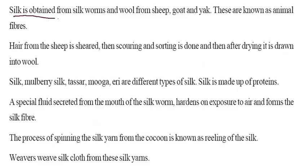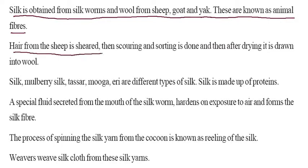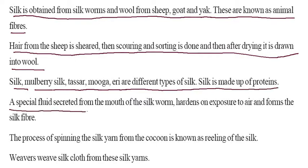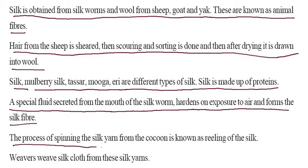Silk is obtained from silkworm and wool from sheep, goat, and yak. These are known as animal fibers. Hair from the sheep is sheared, then scouring is done, and after drying, it is turned into wool. Silk types include mulberry silk, tasar, mooga, and peri. Silk is made up of proteins. A special fluid secreted from the mouth of the silkworm hardens when exposed to air and forms the silk fiber. The process of spinning the silk yarn from the cocoon is known as reeling of the silk.